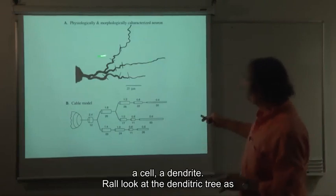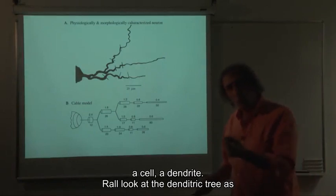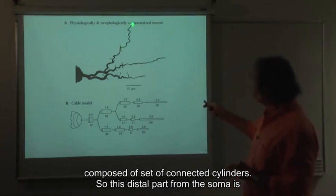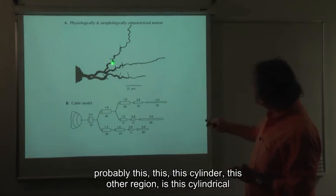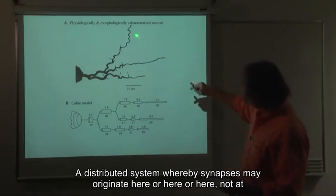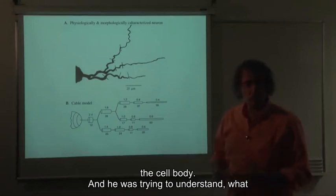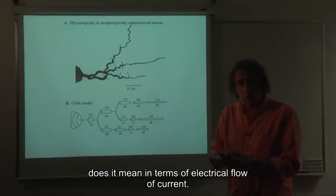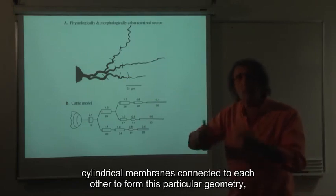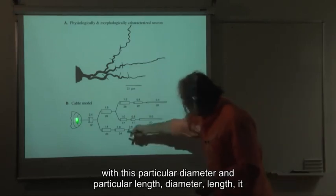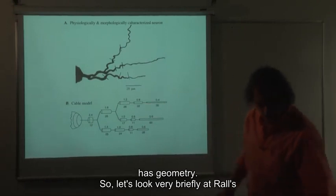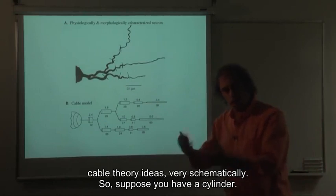To show it schematically: if you have a cell with a dendrite, Rahl looked at a dendritic tree as composed of a set of connected cylinders. The distal part from the soma is represented by one cylinder, another region by another cylindrical membrane. It is a distributed system whereby synapses may originate at various locations, not at the cell body, and he was trying to understand what it means in terms of electrical flow of current — to have a distributed system represented as a set of cylindrical membranes connected to each other with a particular diameter and length geometry.